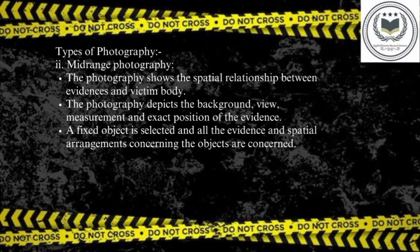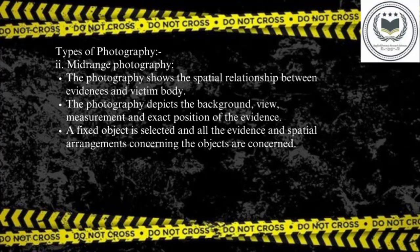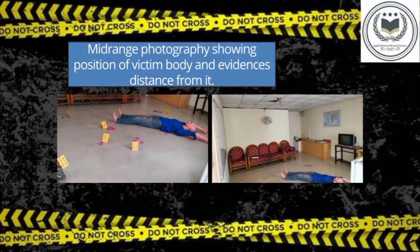Here are some pictures showing the crime scene from outside and its surroundings. The next type is mid-range photography. As the name suggests, mid-range photography shows the spatial relationship between evidence and the victim's body. Unlike overall photography where the whole crime scene is captured, mid-range photography captures only two to three pieces of evidence or evidence near the body, establishing a relationship between the victim and the evidence. This gives an idea about the sequence of events at the crime scene. It should depict the background, view, measurement, and exact position of the evidence. Here are two images showing mid-range photography — blood patterns, a weapon, a phone battery, and shoes — from which we can get an overall idea of what happened.